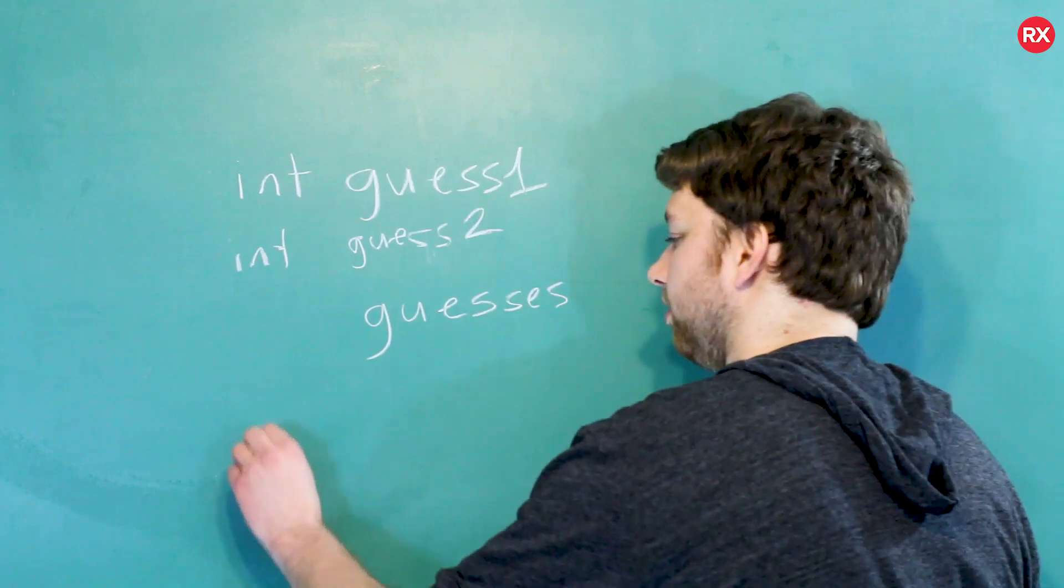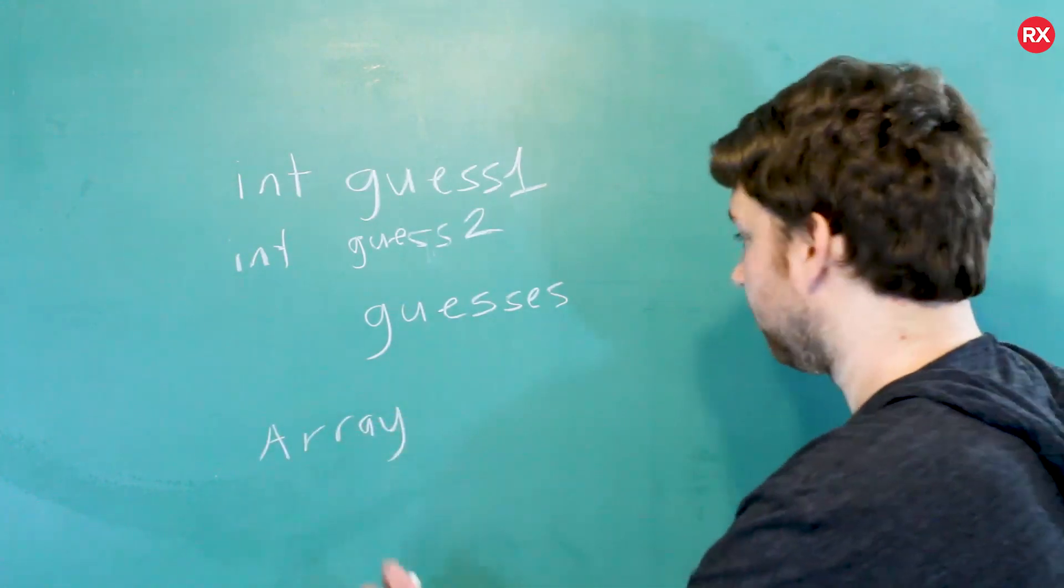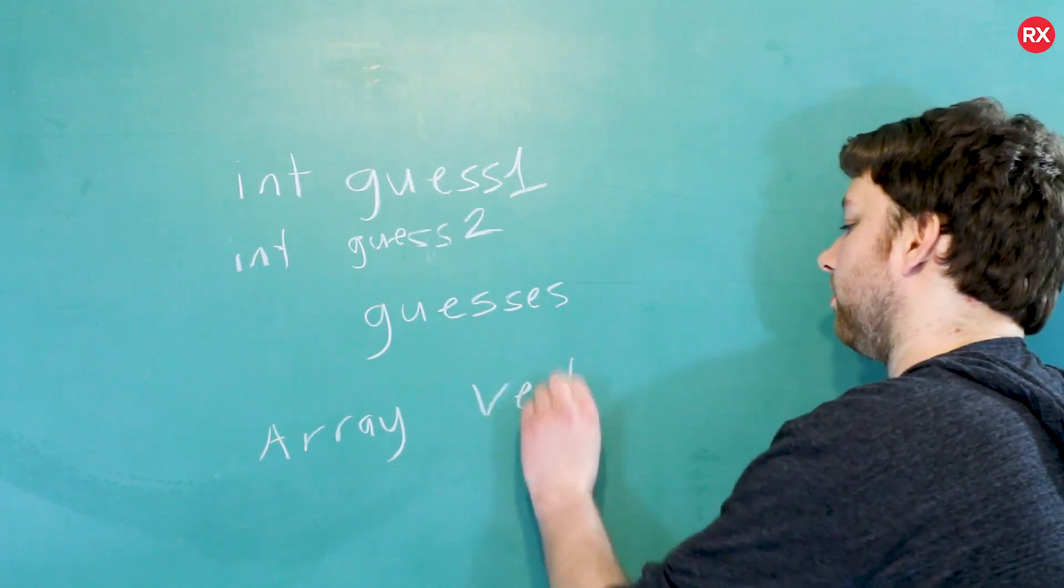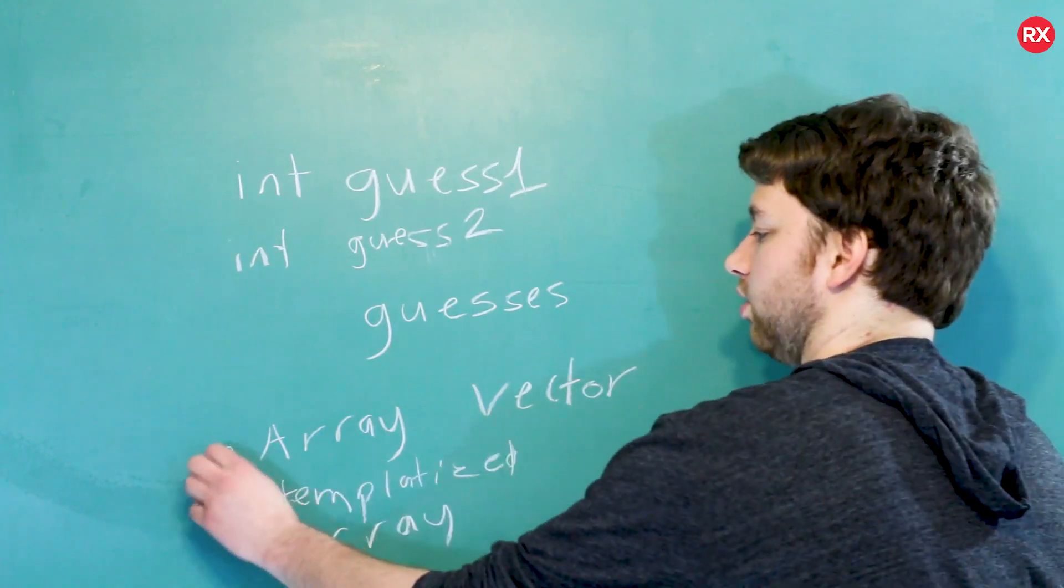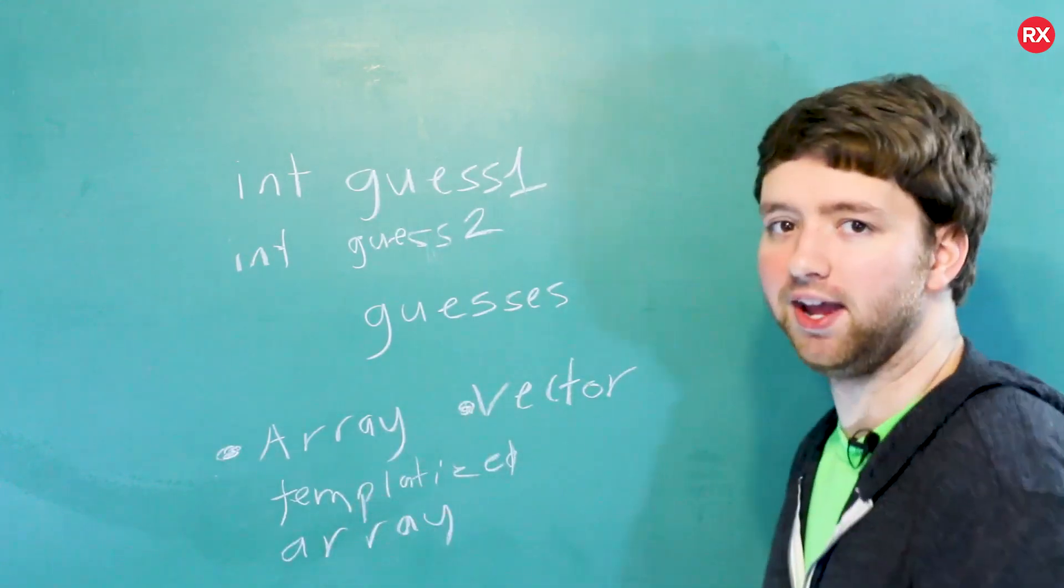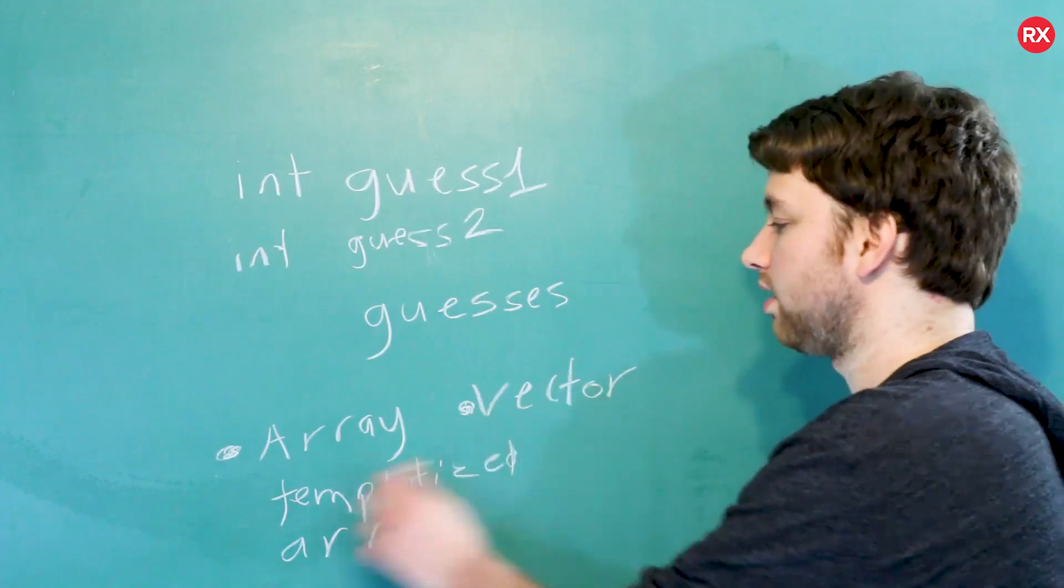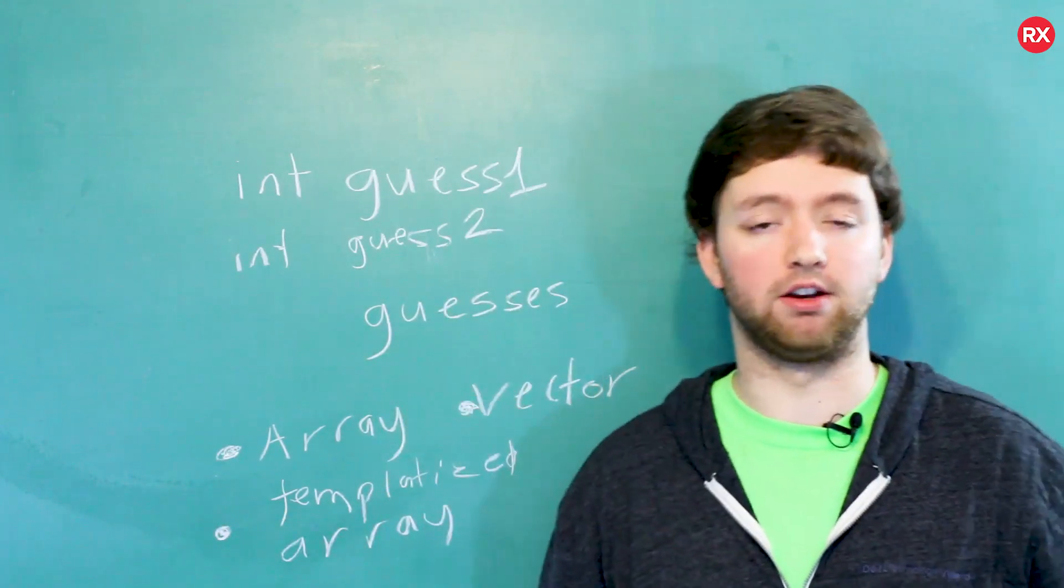So there are two things you really need to know about. And there's actually three. So we have an array, and then we have a vector, and then we have a templatized array. So arrays and vectors and then a special type of array. And we're going to talk about these three things, and then in the upcoming videos we're going to build a system to keep track of our guesses.